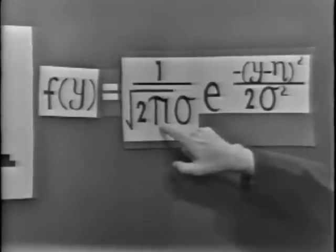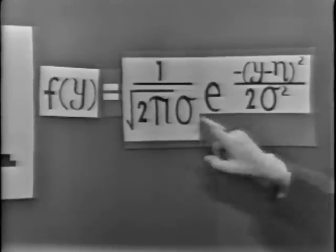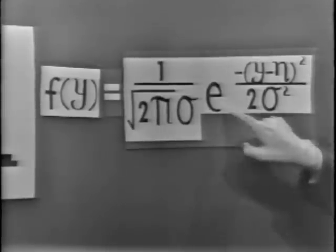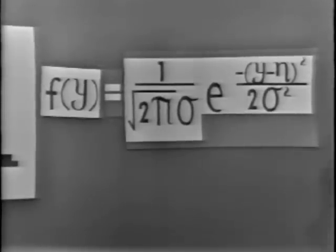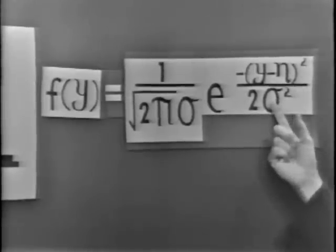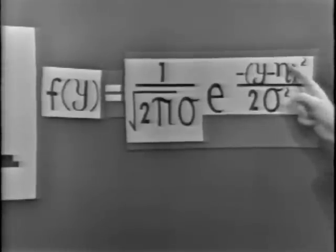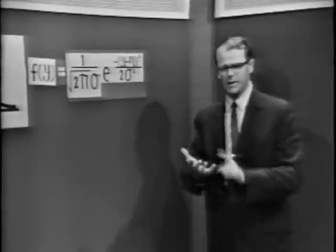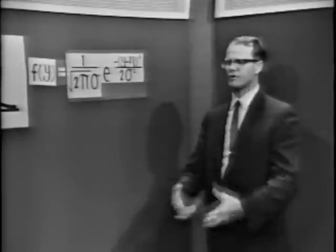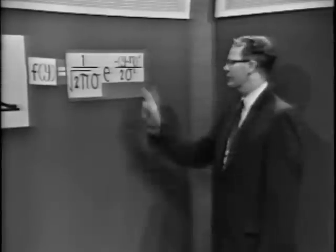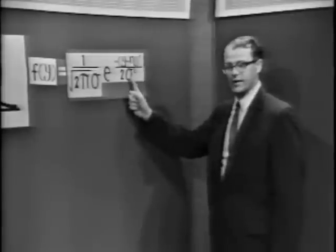Pi is our old friend 3.14159; e is the base of the natural logarithms — those are just mathematical constants. This distribution function has two parameters: one is the mean, eta, and the other is the variance, sigma squared. If you tell me eta and sigma squared, you've completely characterized the distribution — you need not tell me anything else. There are thousands and thousands of normal distributions — one for every value of eta and every value of sigma squared.